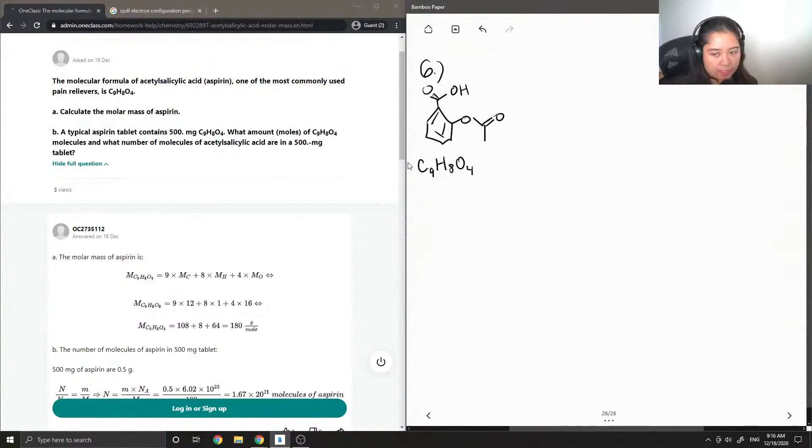Okay, so first, part A asks to calculate the molar mass of aspirin. So to do that, we need to find the atomic masses of carbon, hydrogen, and oxygen. And these can just be found on the periodic table. So now,